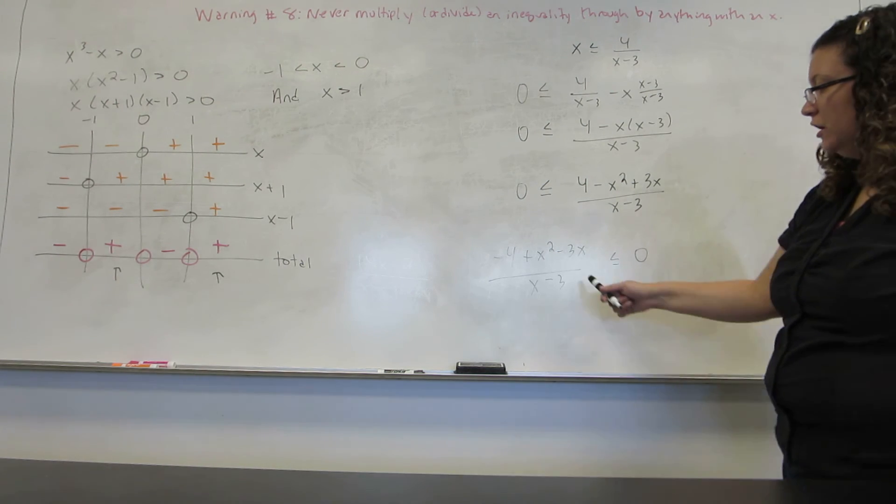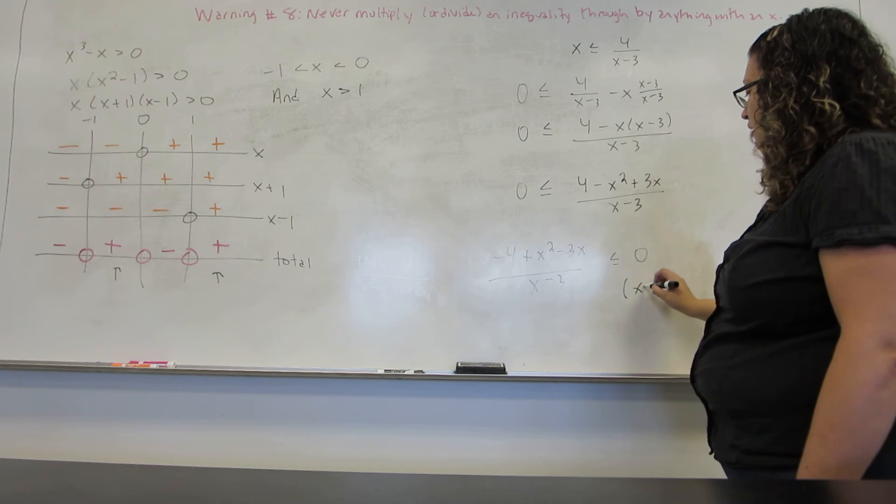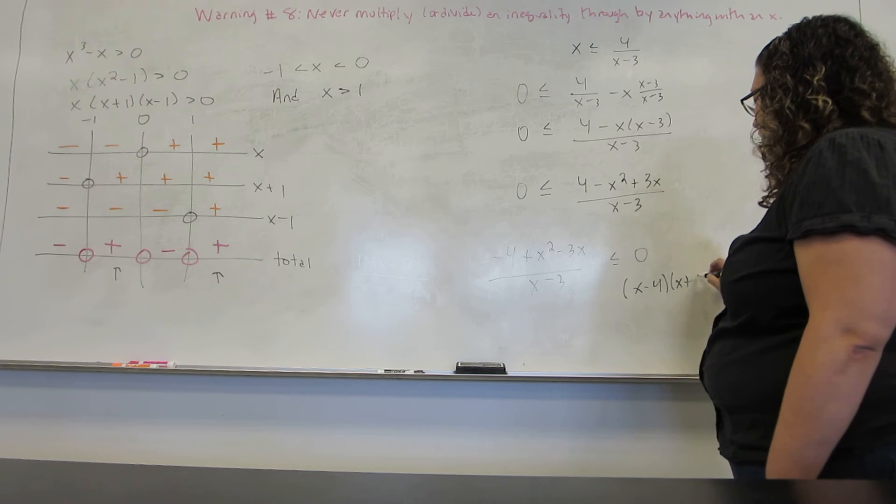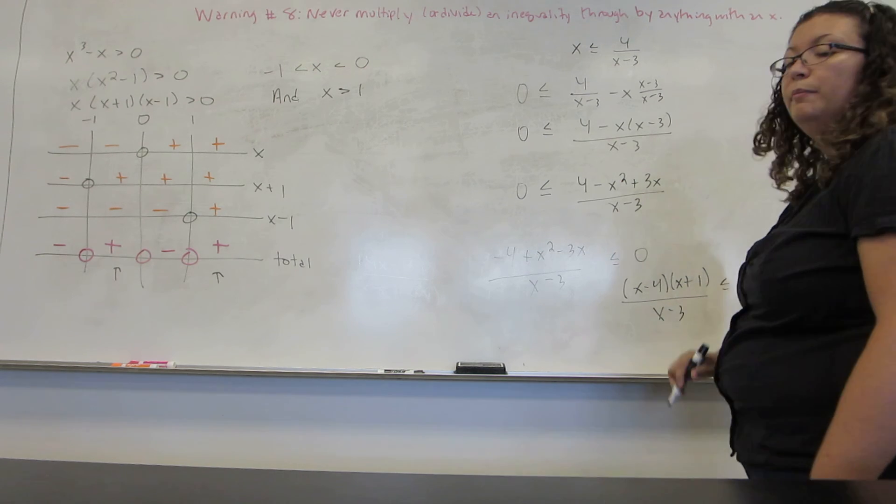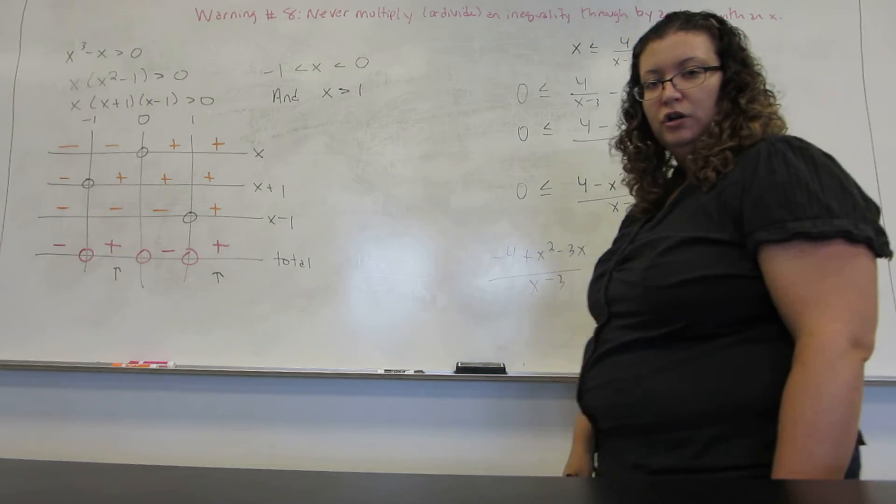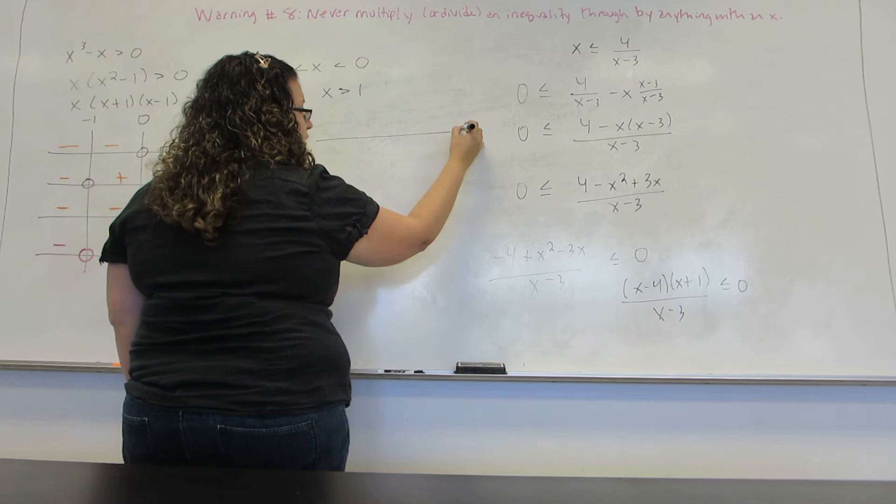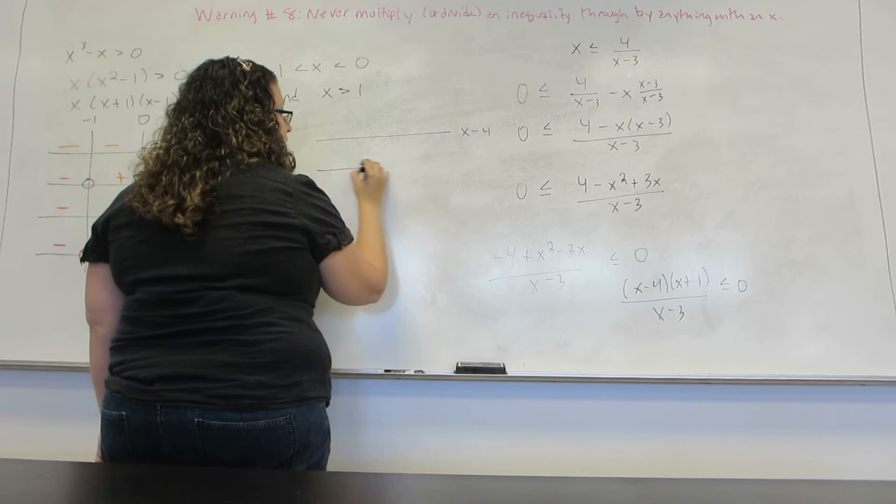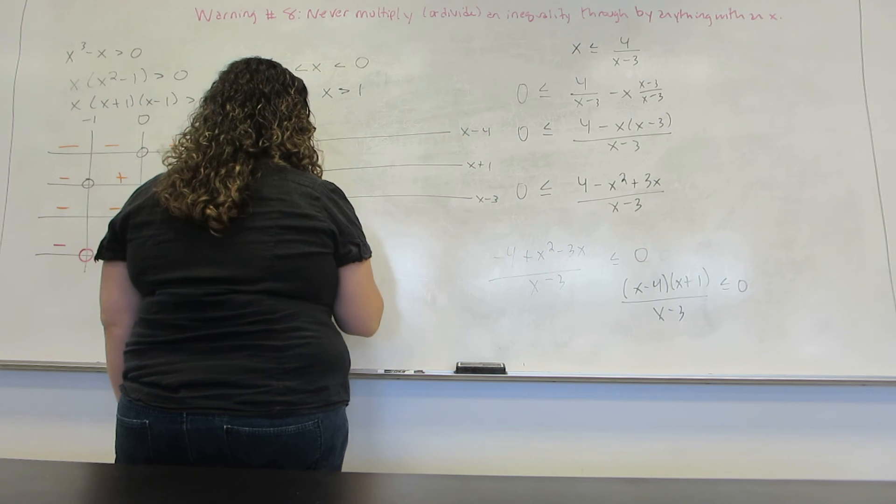Now when I try to factor this, X squared minus 3X minus 4, I end up with X minus 4, X plus 1 on top and X minus 3 on bottom. Now I'm going to do my sign chart. Just like I did with the last one, I get a horizontal line for every factor and then one for the total.